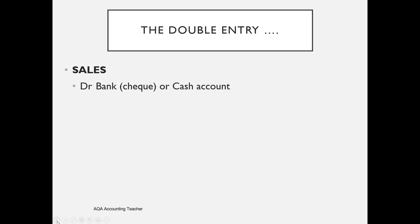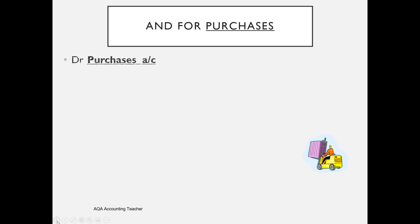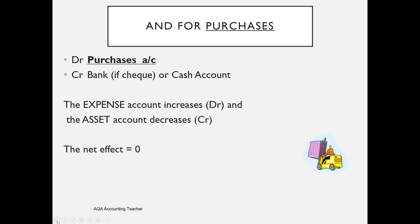The double entry for sales: debit the bank if we've received the money into the bank account, or debit the cash account if we've received cash, and credit the sales account. The asset account increases — we debit either the bank or the cash — and the income account is credited. The net effect, one minus the other, is zero. For purchases, we debit the purchases account — this is an expense, so it goes on the debit side — and credit the bank if paid by check or bank transfer, or credit the cash account if paid in cash. The expense account increases and the asset account decreases. Again, the net effect equals zero.